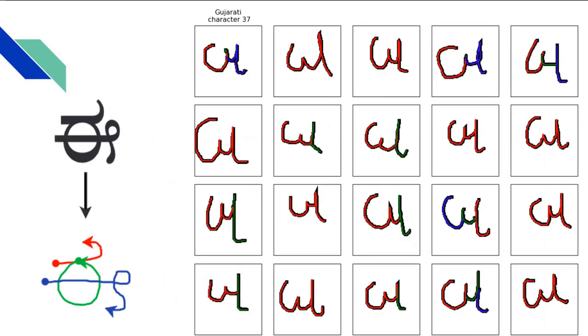To understand stroke, we need to go into the structure of the character. A character can be broken down into different strokes, each with a varying length and shape. As you can see on the right is a character from Gujarati. Each stroke is indicated by a different color.